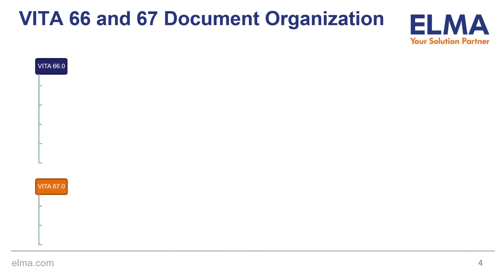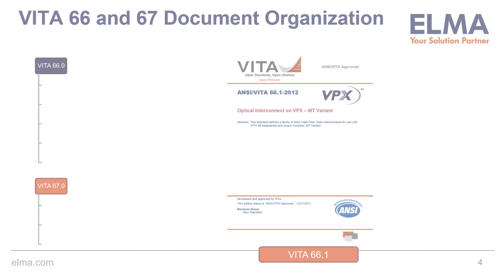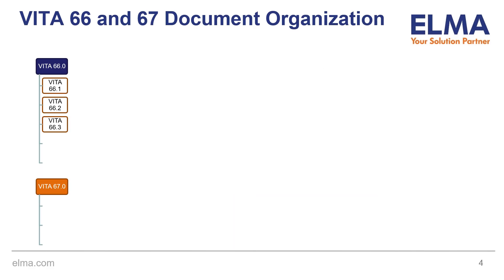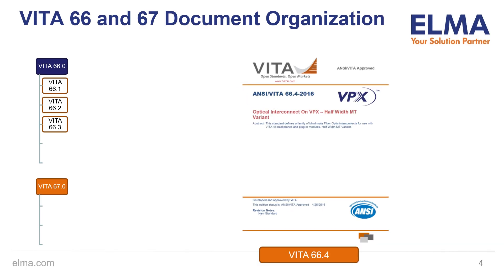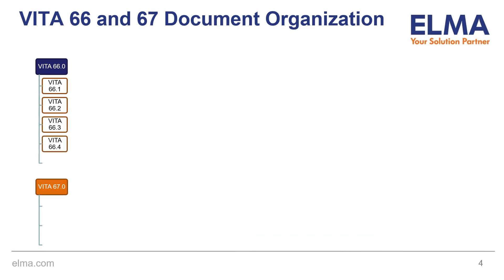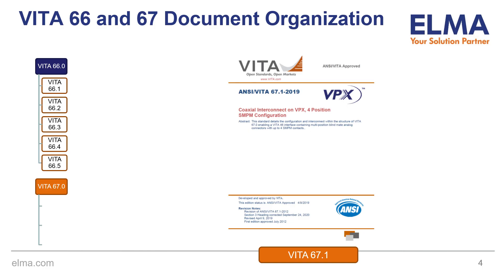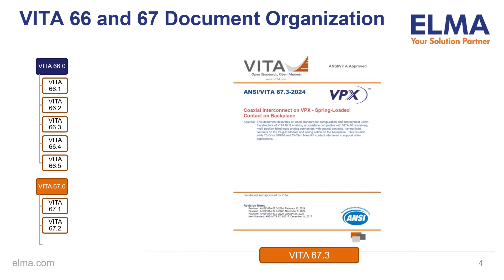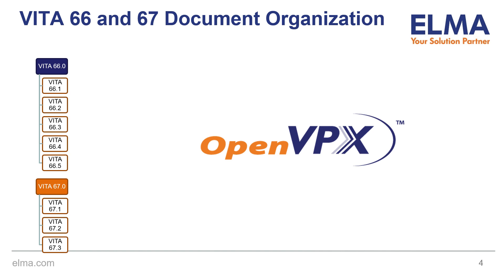These include, for Vita 66: Vita 66.1 MT variant, defining a full-aperture connector module with dual MT connectors; Vita 66.2 ARINC 881 Termini variant; Vita 66.3 mini expanded beam variant; Vita 66.4 half-width MT variant; and Vita 66.5 hybrid variants, which also add support for 1-inch pitch boards and increased connector densities. For Vita 67, we have Vita 67.1 half-sized 4-position SMPM configuration, Vita 67.2 full-sized 8-position SMPM configuration, and Vita 67.3 spring-loaded contact on backplane, which adds a host of new features and connector styles. However, OpenVPX does not fully support all of these. The standard does not call out support for Vita 66.2, 66.3, or 67.2.